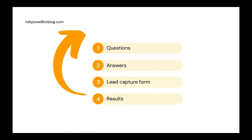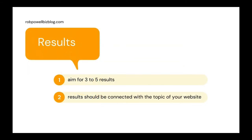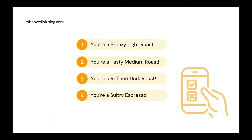So let's begin designing a personality quiz starting with the results. Most personality quizzes have three to five results, so aim for something in that range — more than five and you're setting yourself up for a lot of work. Try to make the results somehow connected with the topic of your website. For example, in a personality quiz for a coffee website your results might look like this: one, you're a breezy light roast; two, you're a tasty medium roast; three, you're a refined dark roast; and four, you're a sultry espresso.